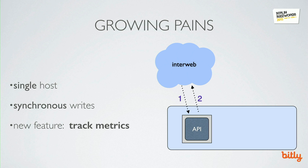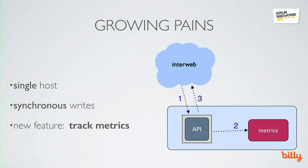To explain how NSQ works, we'll start with a really simple example and build on top of that. This is really early Bitly — we have a single host and an API that shortens links and returns synchronously to our API clients. A new requirement comes in to track metrics against these requests. The naive approach would be to synchronously write into our metric system before returning back to our client. But what happens when our metric system goes down? Will our API requests hang or fail? How will we handle scaling increasing API request volume or breadth of metrics collection?